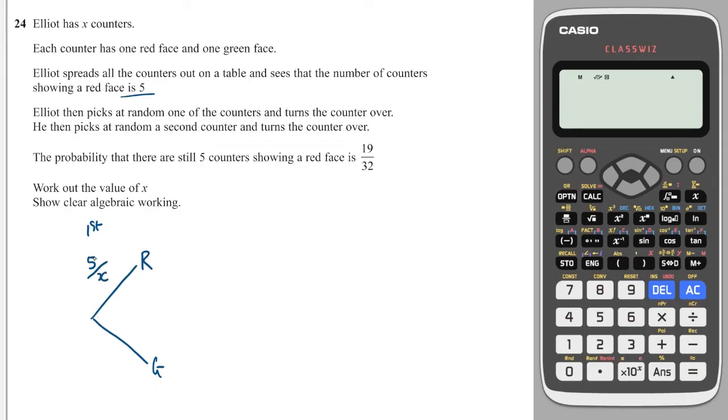And if there are 5 showing red and there are X in total, then how many greens will there be? Well, there'll be the difference between X and 5, which will be X minus 5, and that will be over X because there are X counters in the bag.